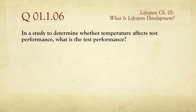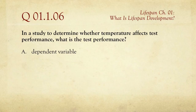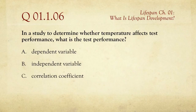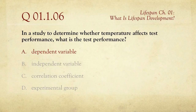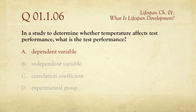Question six: In a study to determine whether temperature affects test performance, what is the test performance? The choices are A, a dependent variable; B, an independent variable; C, a correlation coefficient; or D, an experimental group. We want to see how temperature causes differences in test performance. Test performance is the outcome — the result — so it is A, the dependent variable. It depends on the causal variable, the independent variable, which is temperature. You would look for the correlation coefficient between them to assess the strength of the relationship.